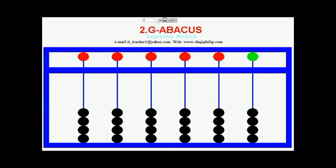Now for setting 5, clear the abacus by moving all the earth beads down and move the heaven bead down to set 5.